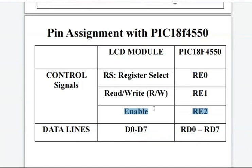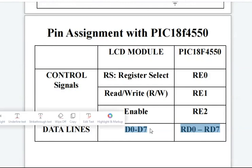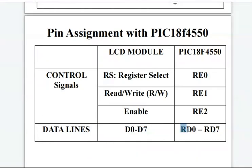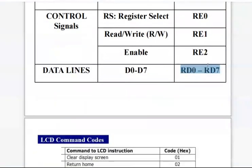The enable pin of the LCD module is connected to the RE2 pin of the PIC18F microcontroller. Then we have D0 to D7—a total of 8 data lines of the LCD—connected to the RD0 to RD7 pins of the PIC18F microcontroller.